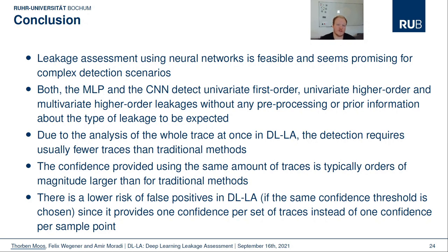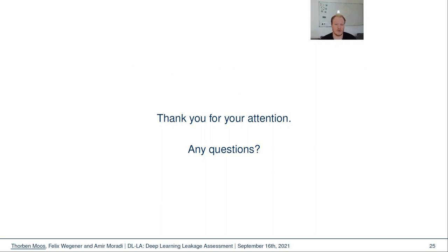To conclude this talk, we have shown that leakage assessment using neural networks is feasible and worth the extra runtime for complex detection scenarios. We demonstrated that very simple networks can deliver quite universal detection performance, even when faced with multivariate higher-order leakages. We have seen that the amount of traces required for detection is typically lower in DLLA compared to classical detection, while also providing a higher confidence. Finally, since DLLA produces one confidence value per set of traces instead of one value per sample point, the risk of false negatives is lower if the same threshold is chosen. Thank you for your attention. If there are any questions, feel free to ask them during the live session at CHESS 2021 on September 16th.